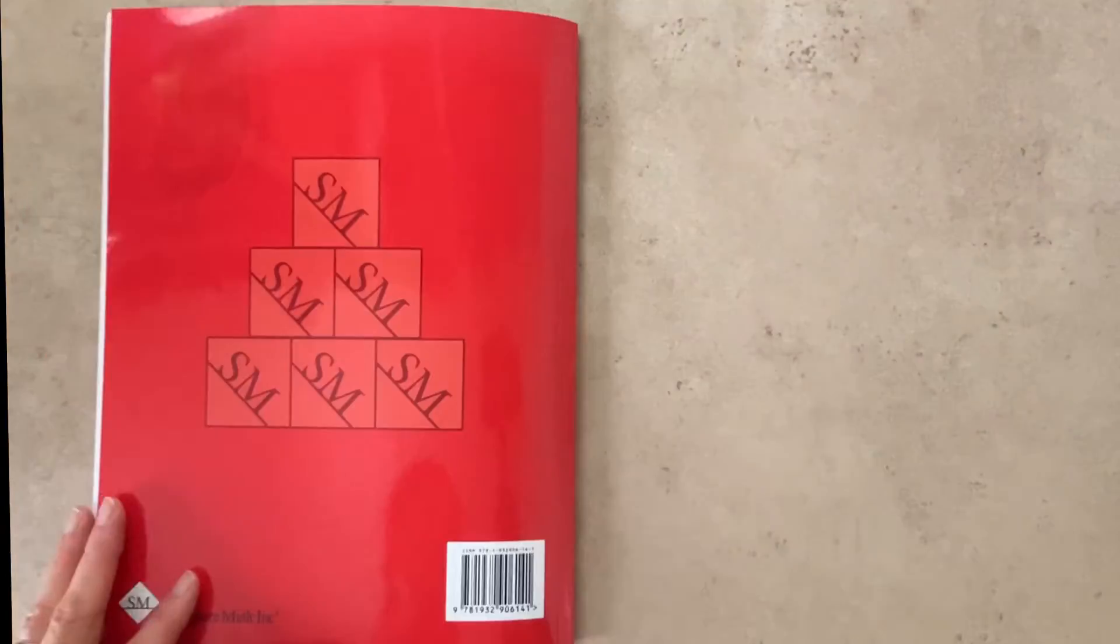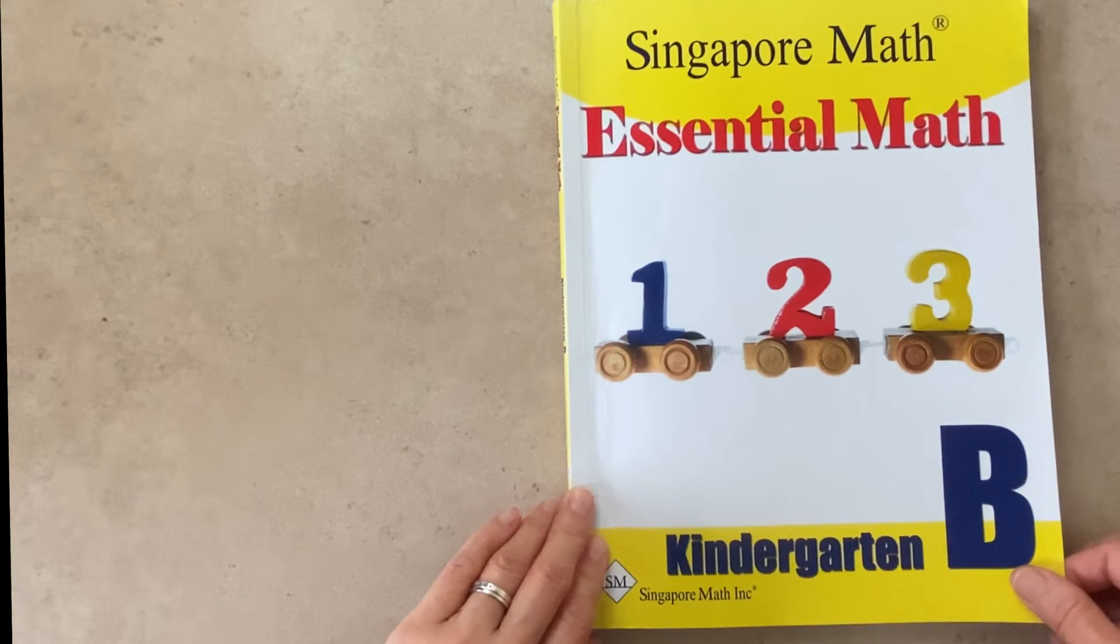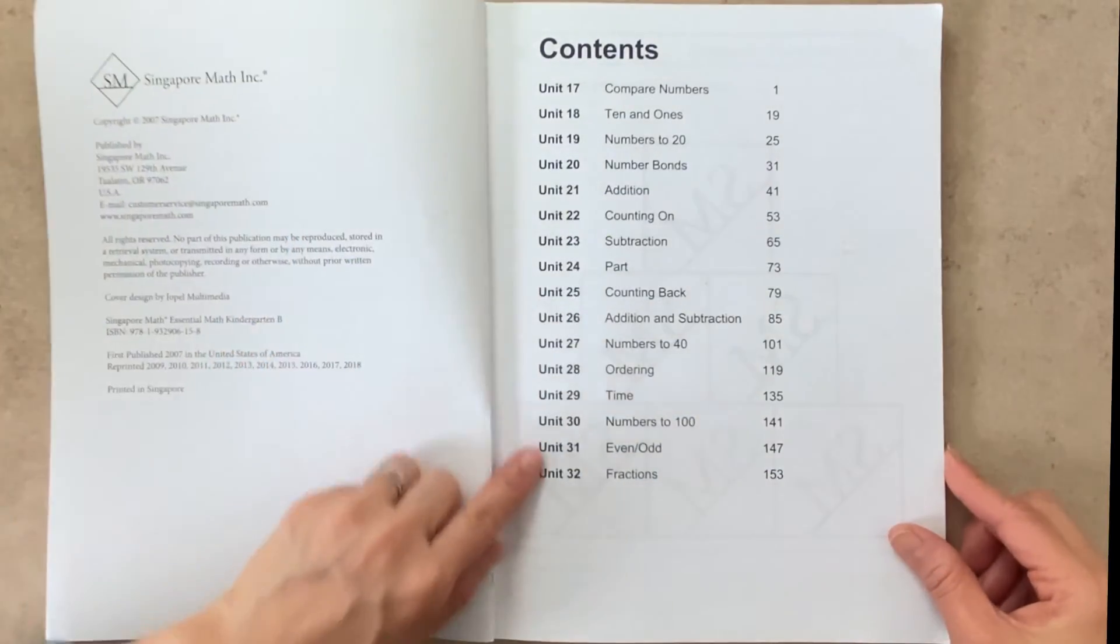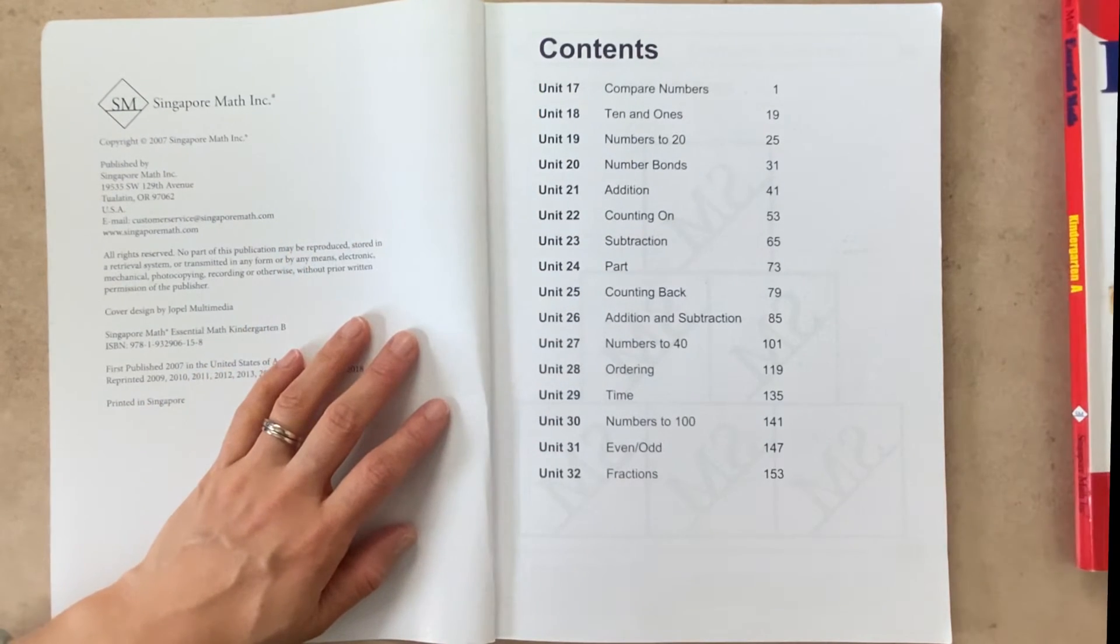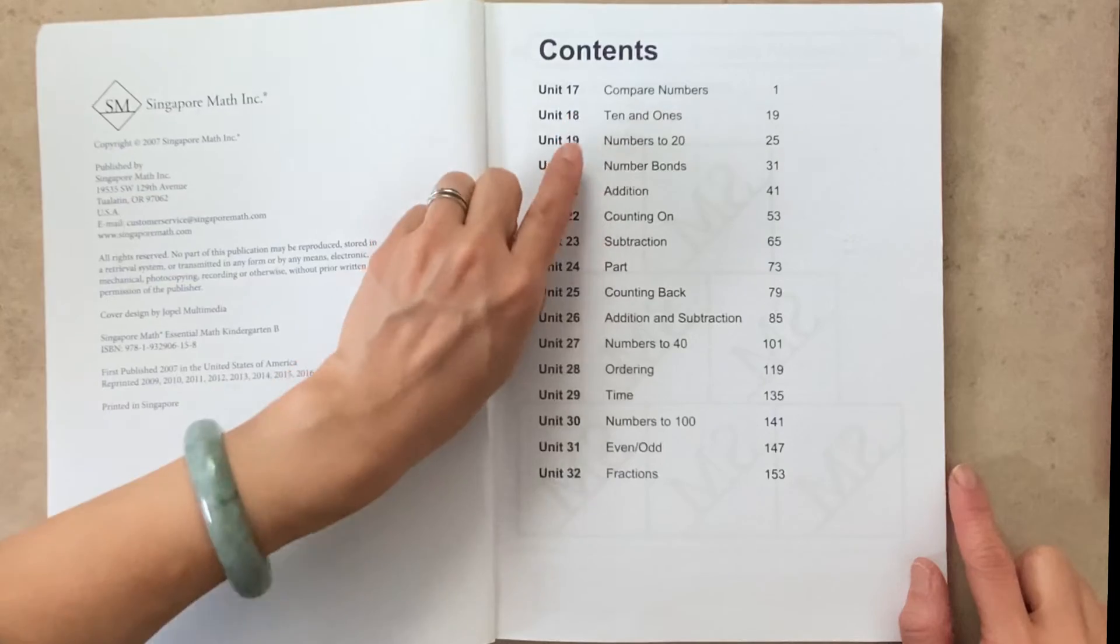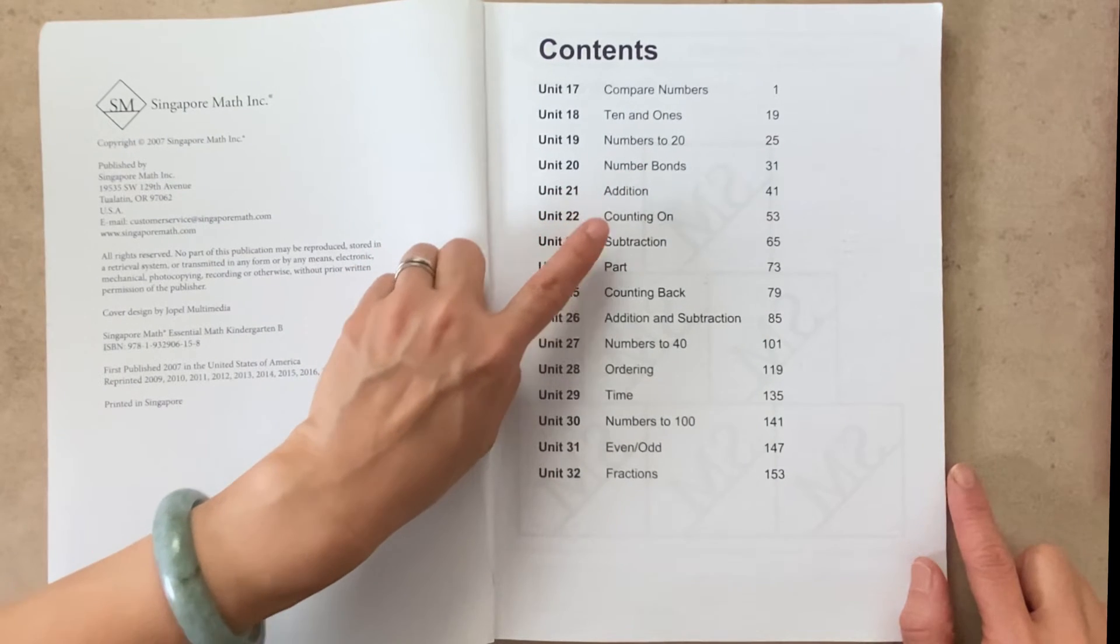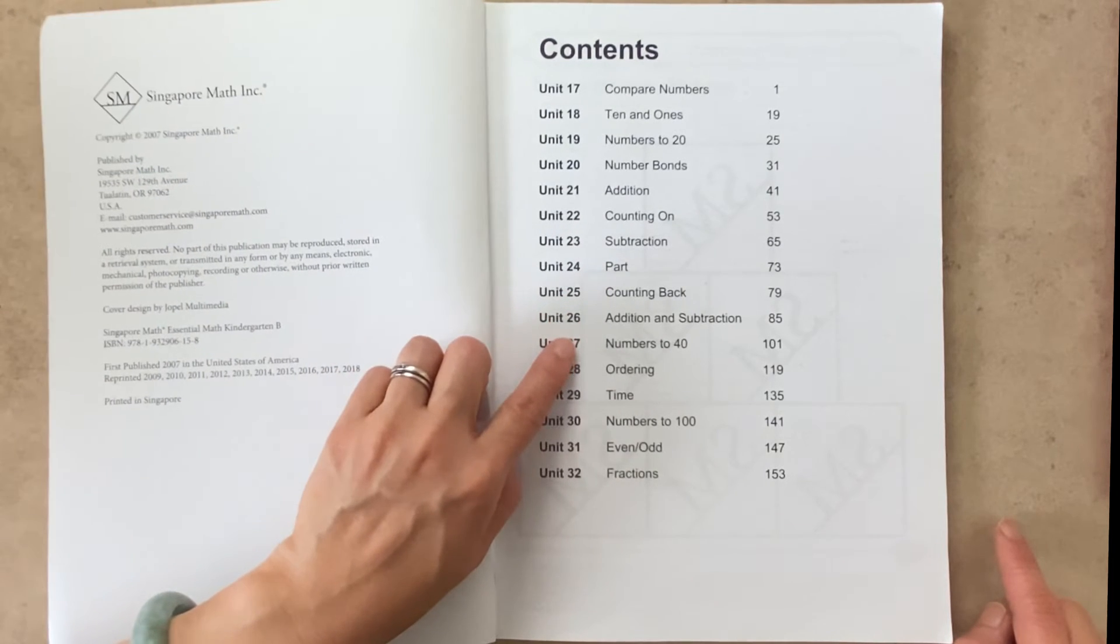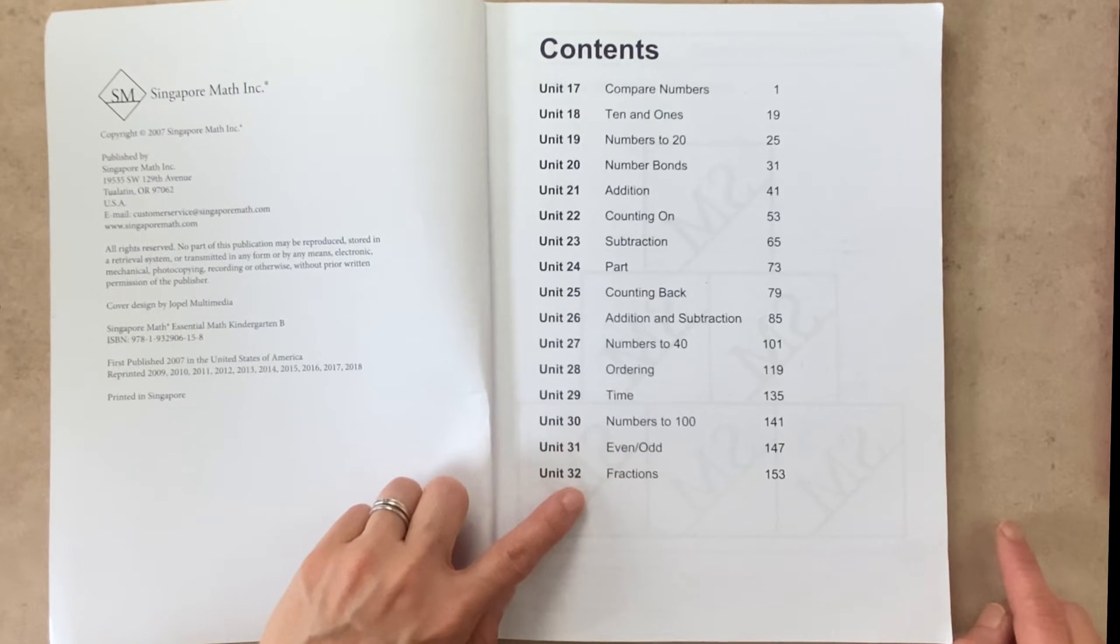That completes kindergarten A. Now let's move on to kindergarten B, which is the second half of the kindergarten level of Singapore math. So here are the table of contents. So it continues with the units. We left off with Unit 16 in the kindergarten A. Now here's Unit 17. It goes all the way through Unit 32. So first we're going to compare numbers. Then learn about tens and ones. Then numbers up to 20. Number bonds, addition, counting on, subtraction, part, counting back, addition and subtraction, numbers to 40, ordering, time, numbers to 100, even and odd, and lastly, fractions.